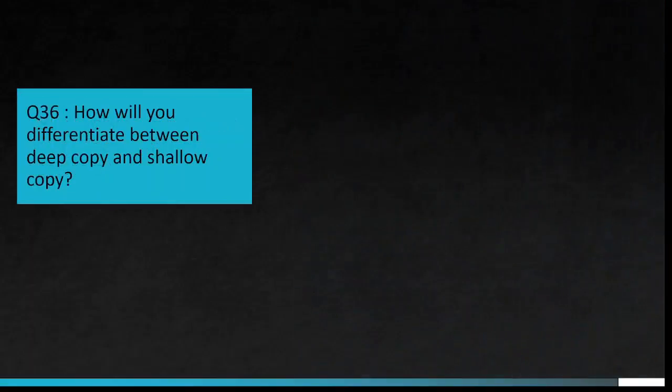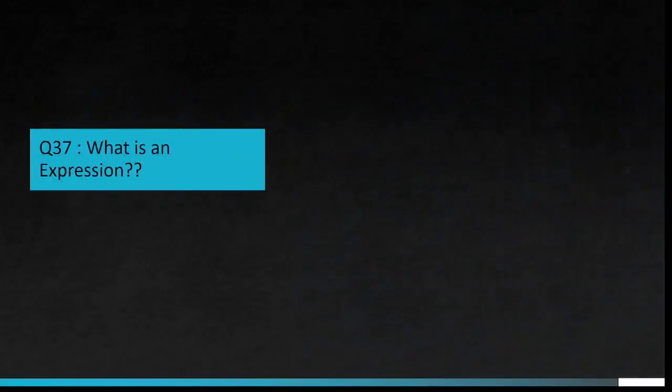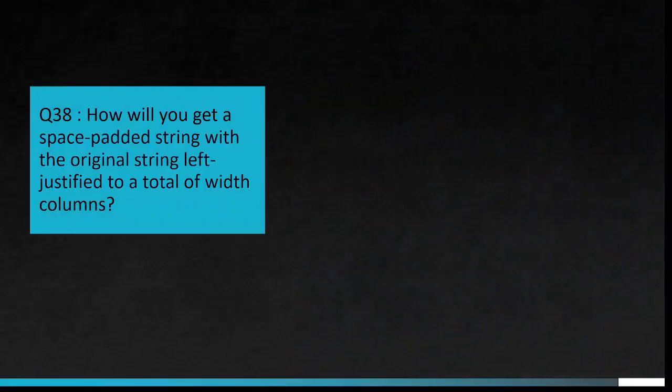Question number 36: How will you differentiate between deep copy and shallow copy? We use a shallow copy when a new instance type gets created. Deep copy is used for storing values that are already copied. Question number 37: What is an expression? An expression is a combination of variables, values, operators, and a call to functions.